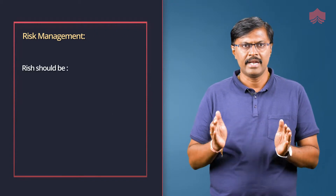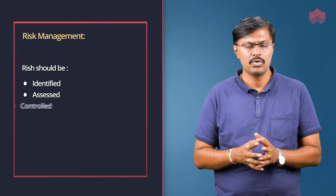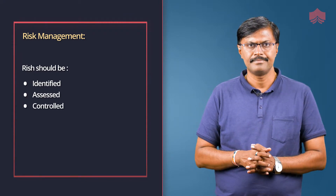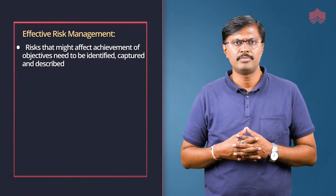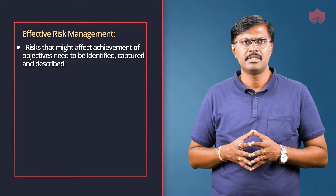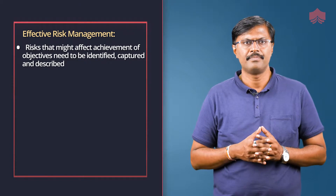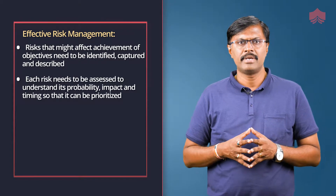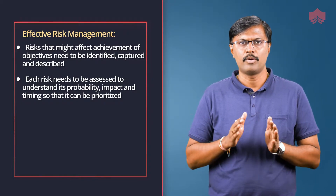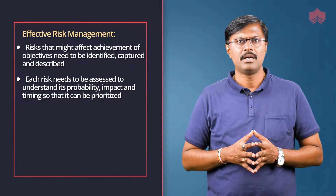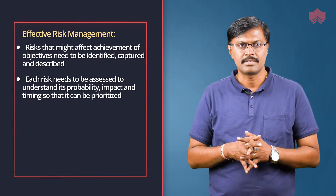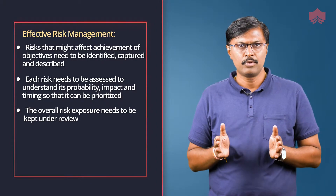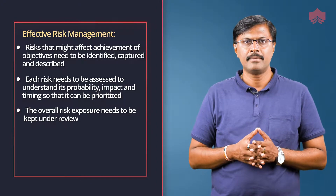Risk should be identified, assessed and controlled throughout the project life cycle. For effective risk management, risks that might affect achievement of objectives need to be identified, captured and described. Each risk needs to be assessed to understand its probability, impact and timing so that it can be prioritized. The overall risk exposure needs to be kept under review.